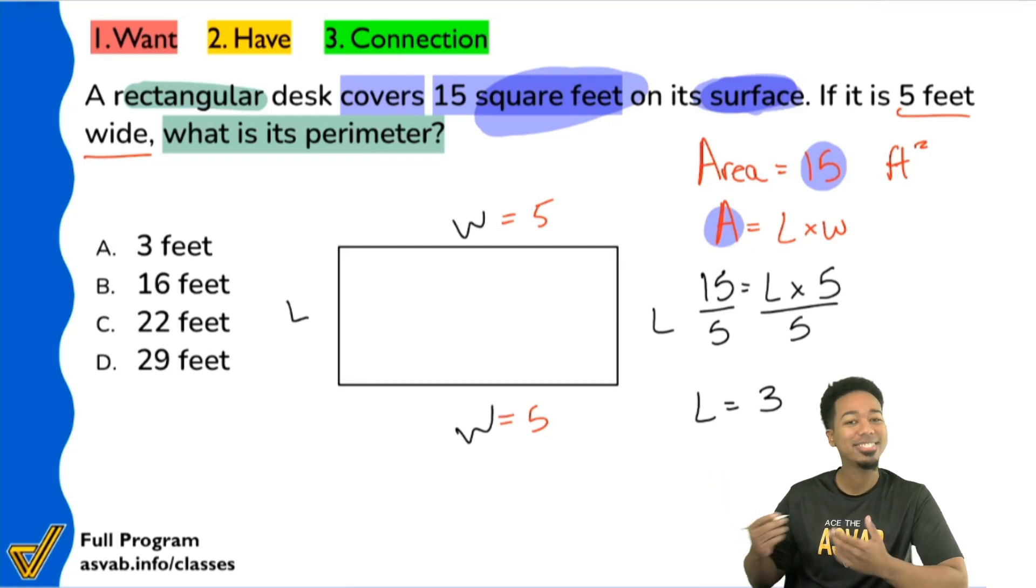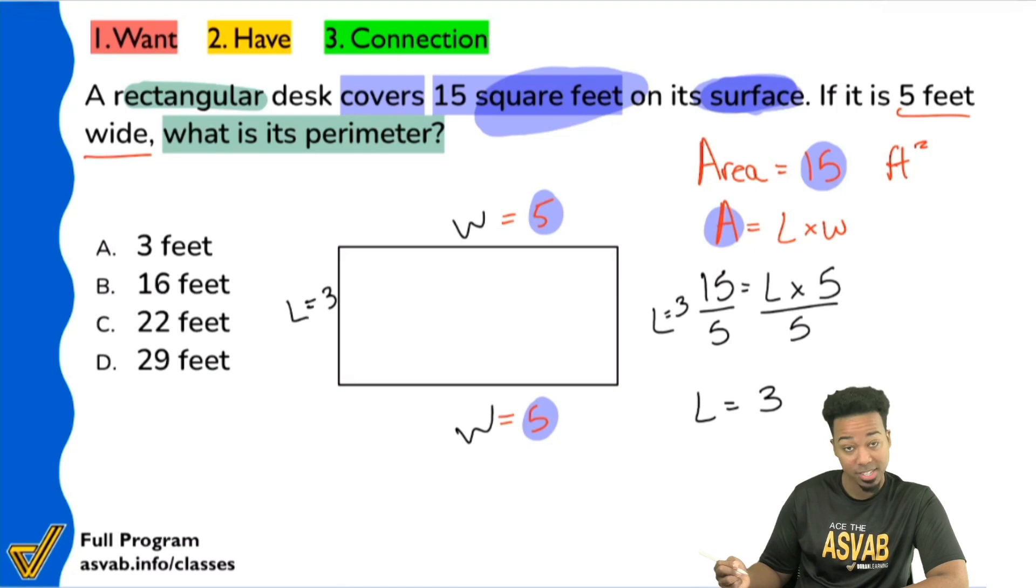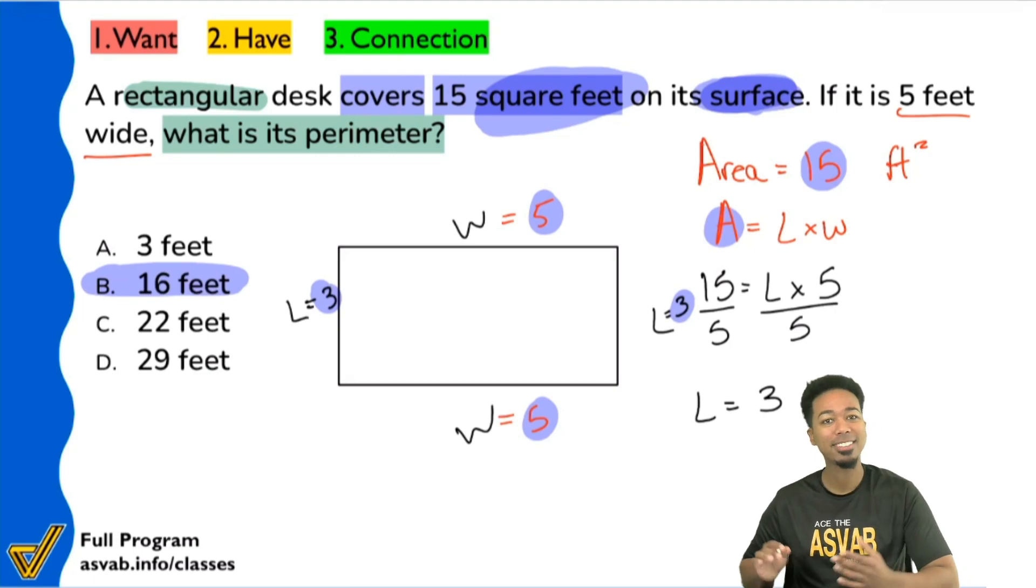So now that we have that, now we can go ahead and find the perimeter and we're all good. Our length is three right here and right there. And so once we add everything up, five plus five is 10, three and three is six, 10 plus six is 16. And there we have it.